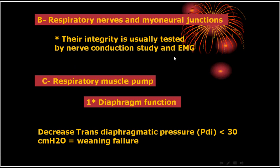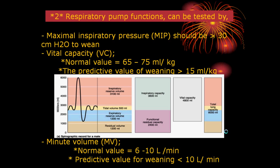The second point is respiratory nerves and neuromuscular junction, which can be tested by nerve conduction studies and EMG — though this is not a routine test. The respiratory muscle pump: you can measure diaphragmatic contractions and see if it can generate 30 cmH2O or more. If it is less than 30 cmH2O, there is some sort of failure, and this can be measured by esophageal pressure.